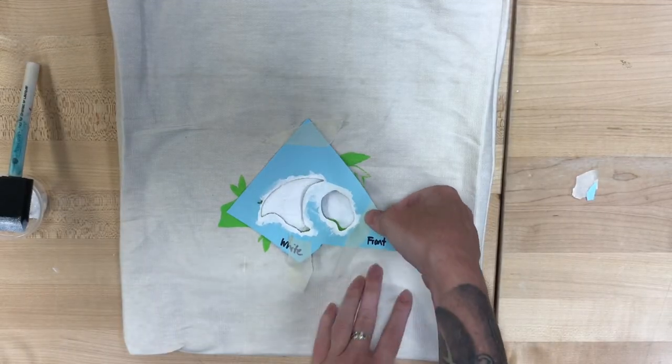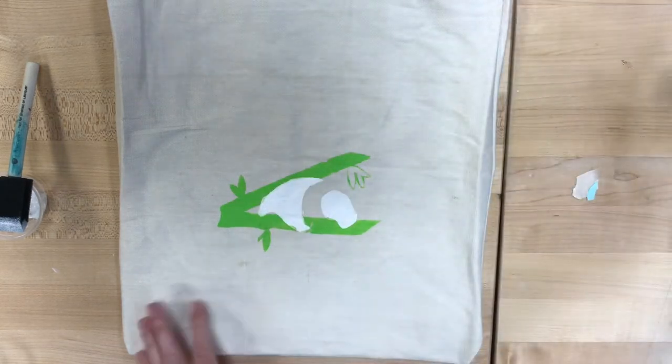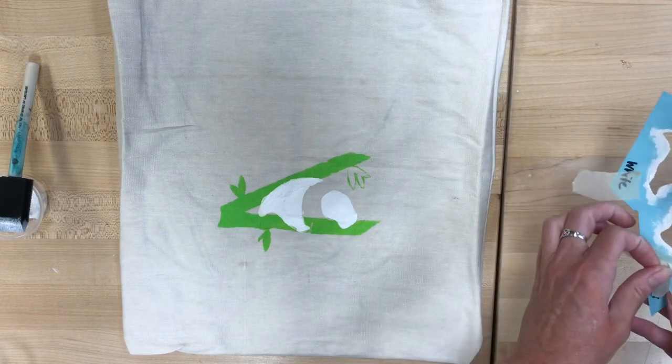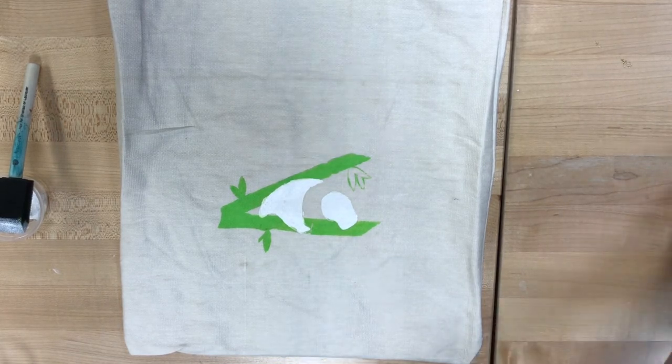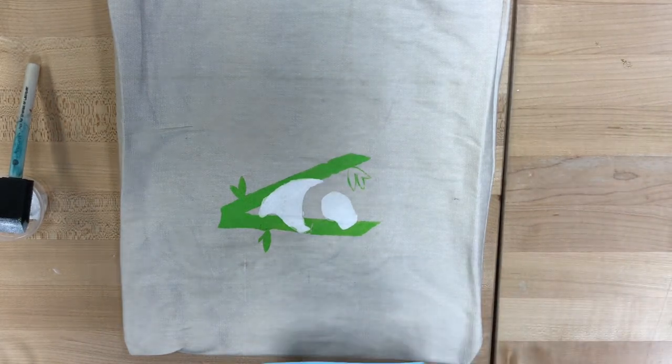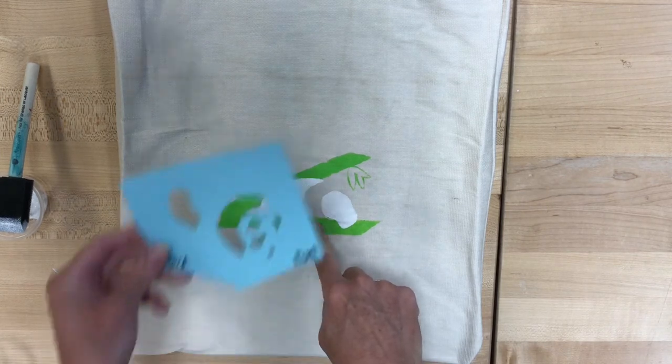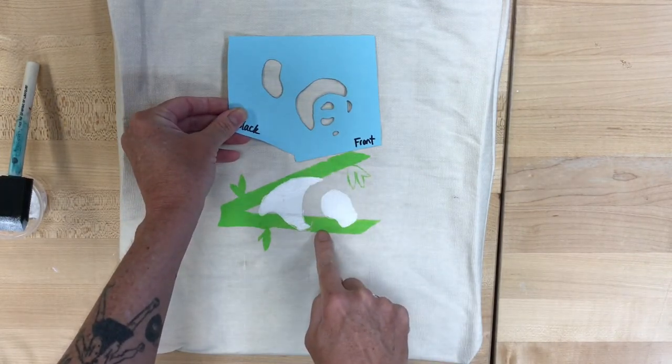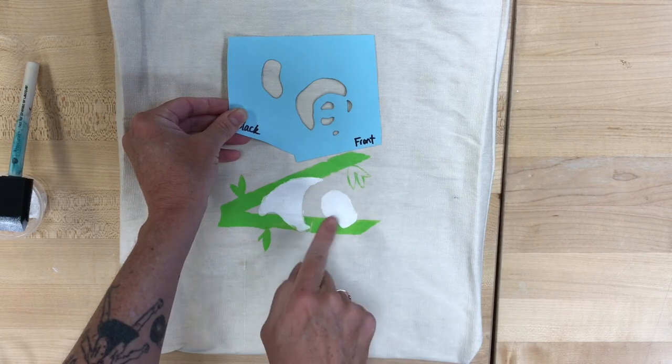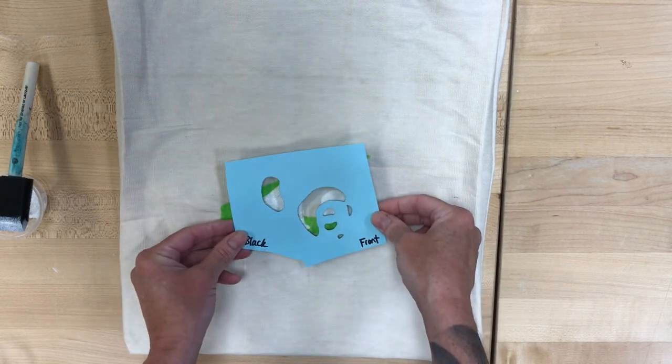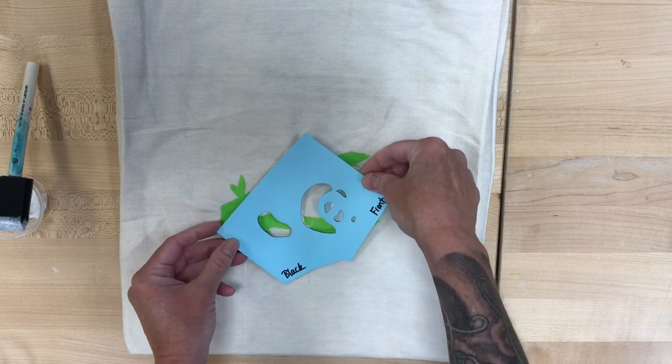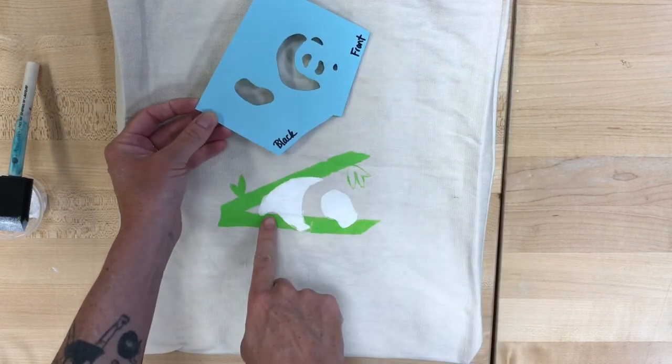And then when that is completely dry, we'll lift up that stencil. So we are almost there. Almost ready for that third stencil. And in the case of the panda, it's going to be black. And that middle kind of U or bridge shape is going to be the arm. The little tiny ones are face, the eyes and the nose. And that last little curve right there is the leg.